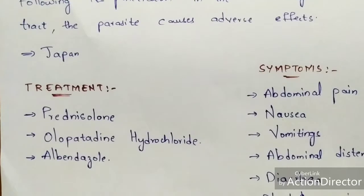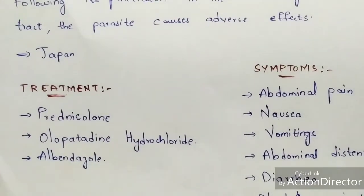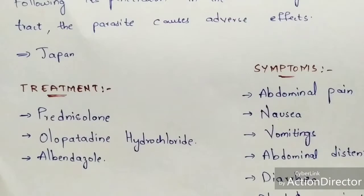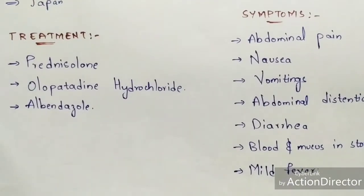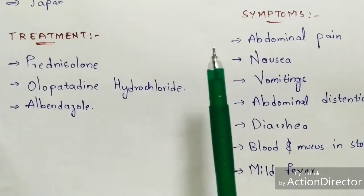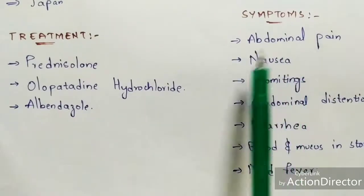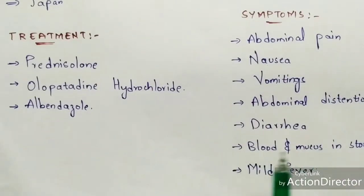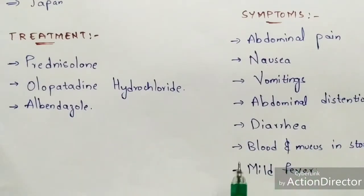The treatments for a person infected with anisakiasis are prednisolone, olopatadine hydrochloride, and albendazole. The symptoms seen in an infected person include abdominal pain, nausea, vomiting, abdominal distension, diarrhea, blood and mucus in the stools, and mild fever.